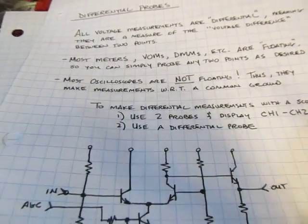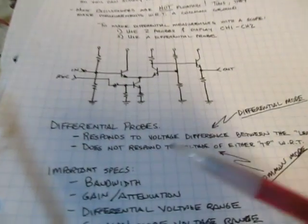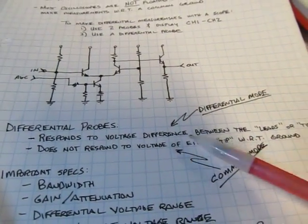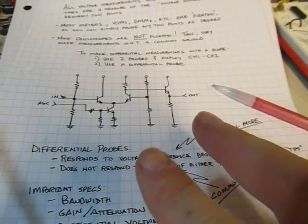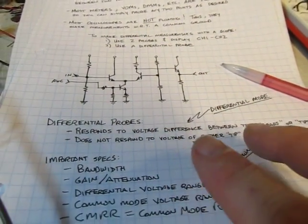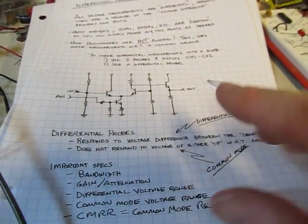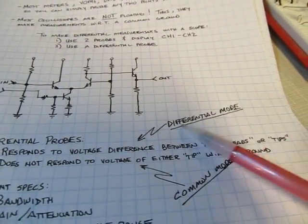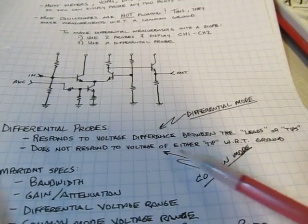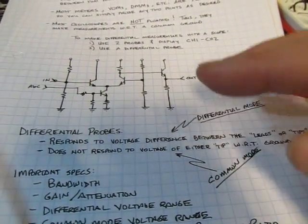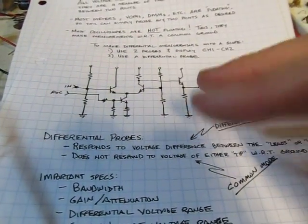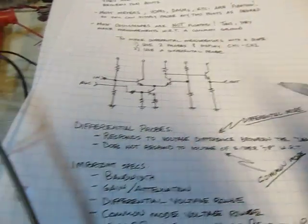By making essentially that measurement into one scope channel. So the differential probes are designed to respond to the voltage difference between those two pins and not respond to the voltage of either of those with respect to ground. The former of that, we call that the differential mode or differential voltage. And then the common mode voltage is where those signals are with respect to ground. So the differential probe is going to reject that common mode and only look at and respond to that differential voltage.